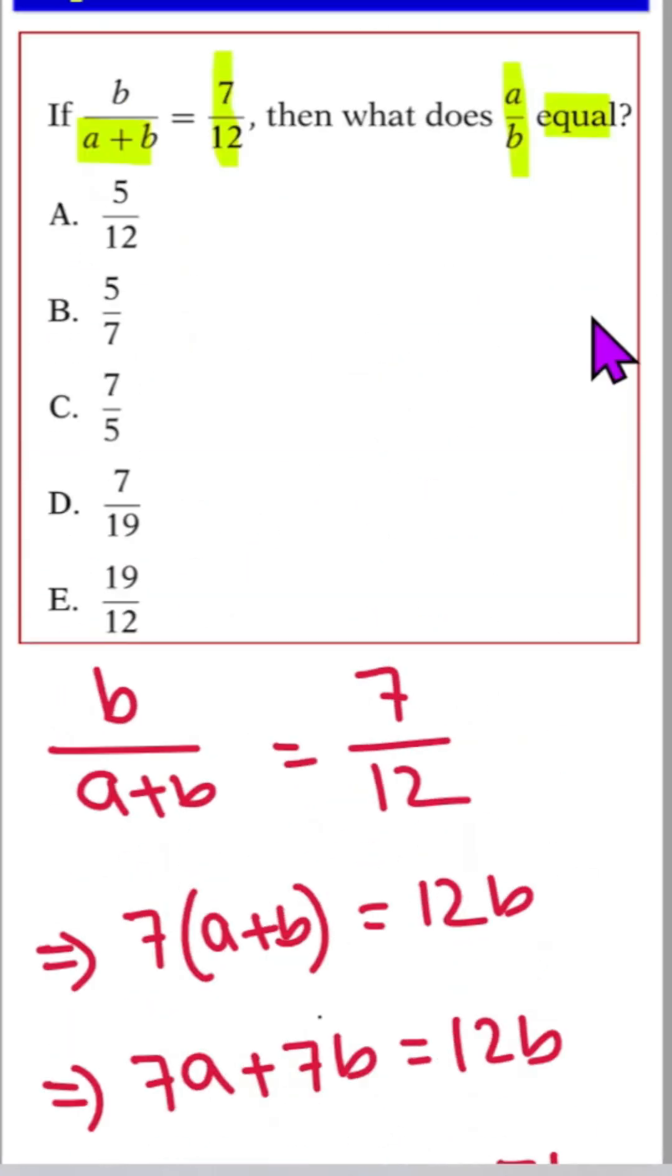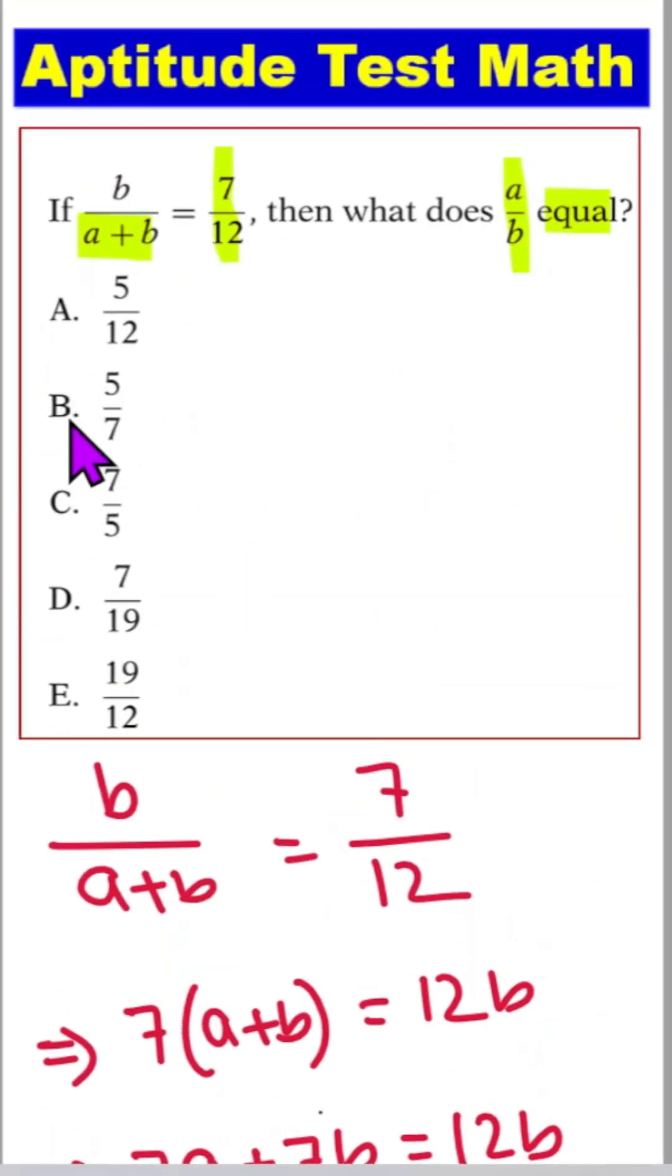So this is our answer. And where is this, 5 by 7? It means number B is our correct answer.